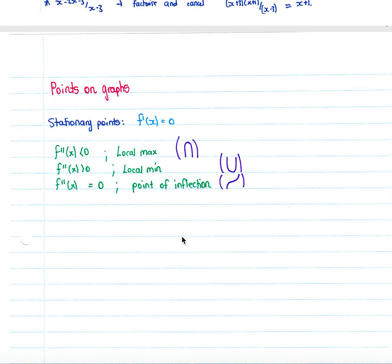They may ask you to solve for points where you have a local minimum or maximum. For a point of inflection, you simply find your second derivative f''(x), make that equal to zero, and the values you come out with will be the points where you have a point of inflection on your graph.